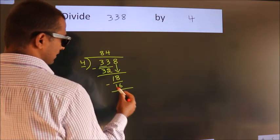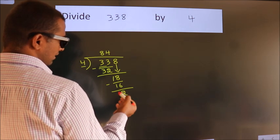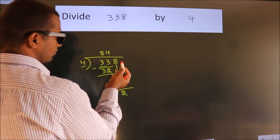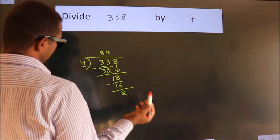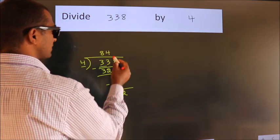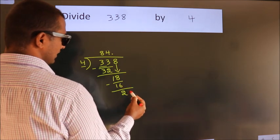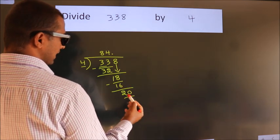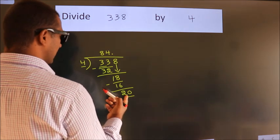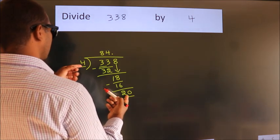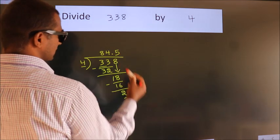Now, we subtract. We get 2. After this, no more numbers to bring down. So, what we do is, we put dot, take 0. So, 20. When do we get 20? In 4 table. 4×5=20.